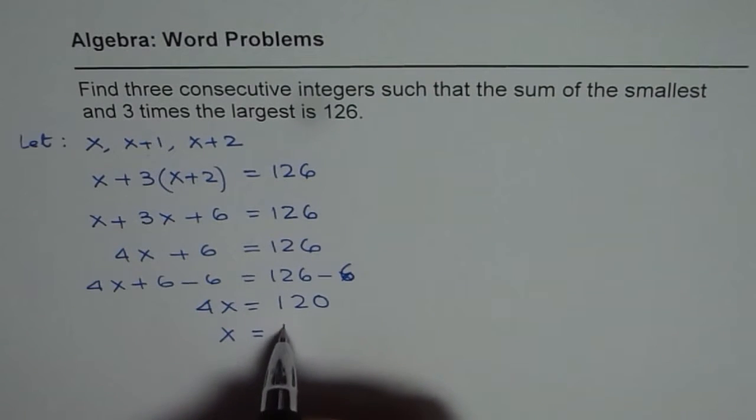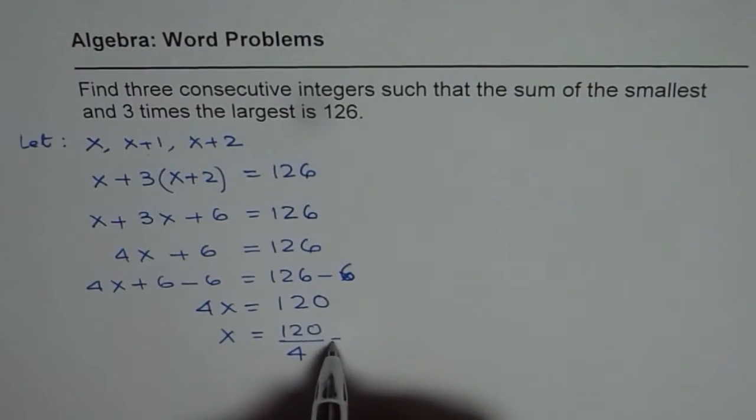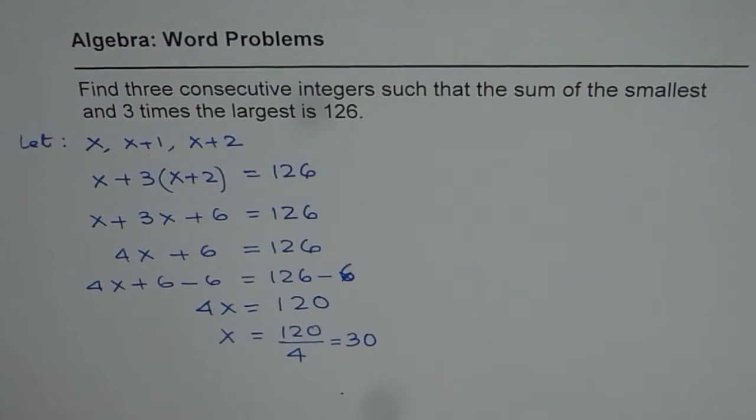So we get x here and 120 divided by 4, and that is 4 times 3 is 12 and then 0 is 30. So therefore the three consecutive integers should be, x is 30 for us, so the numbers are 30, 31, and 32. So that is how we can solve the equation.